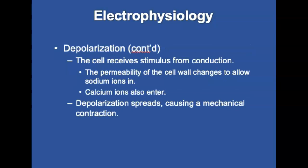When the myocardial cell receives stimulation from conduction, the permeability of the cell wall changes to allow sodium ions in, making the cell more positive. Calcium ions also enter, which helps maintain the depolarized state of the cell membrane. This depolarization spreads along the cell until it is completely depolarized, causing a mechanical contraction.